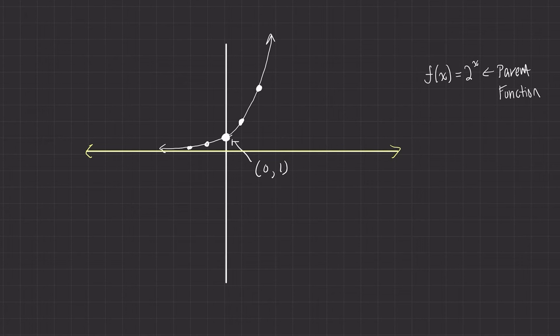We can tell with an exponential function, with a parent function 2 to the x, we can tell that we're going to have an asymptote. So it's asymptotic at y equals 0. So that's a way of saying it approaches the x-axis but never reaches it. We can see that smooth, continuous nature of the function. We can see that it kind of starts off with a really slow climb, and then it starts to skyrocket at some point in its life.